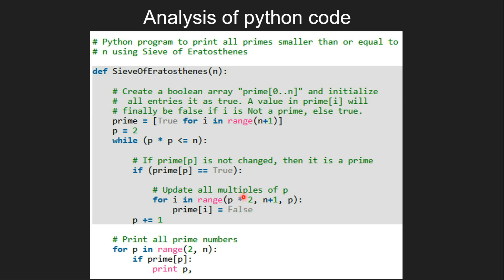which makes ultimately all the non-prime numbers as false. Then finally we print all prime numbers between 2 to n.